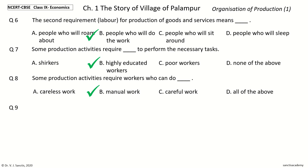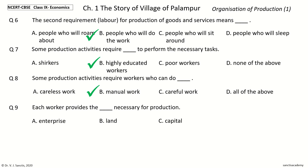Question 9: Each worker provides a dash necessary for production. The options are enterprise, land, capital, or labor. The answer is labor. So, each worker provides the labor necessary for production.